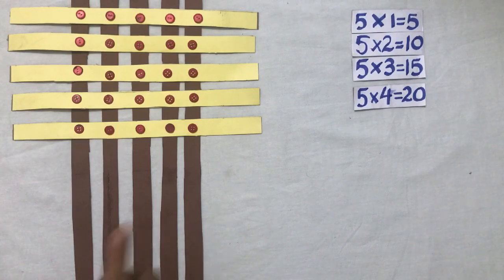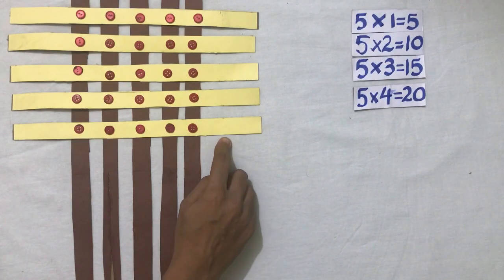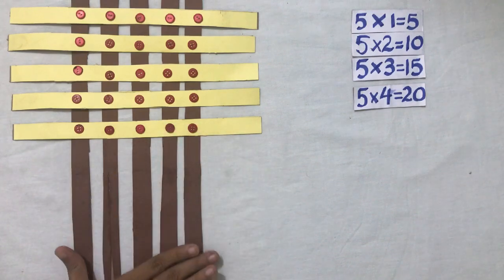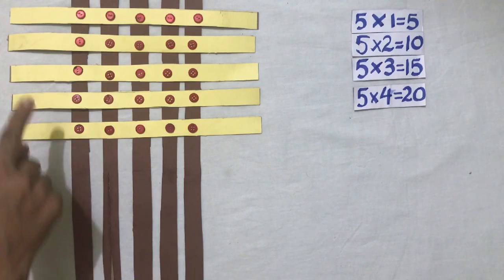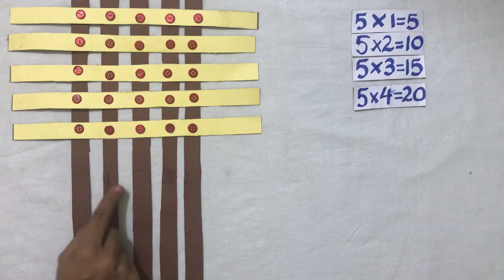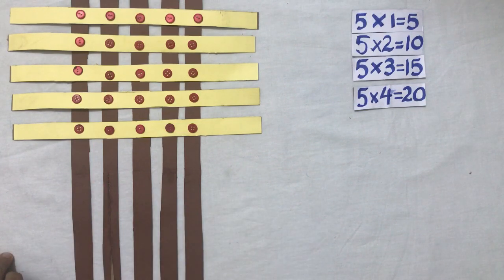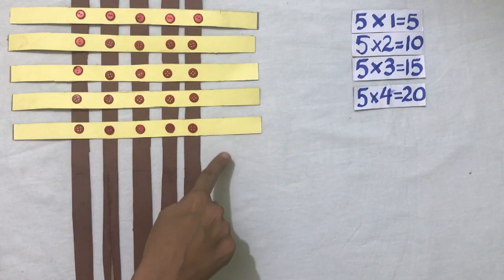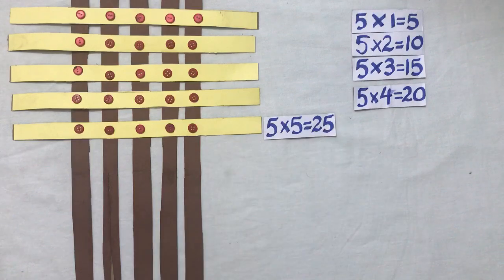Dear students, I have placed one more horizontal strip over these vertical strips. Now tell me the number of horizontal strips. Yes, they are five. And number of vertical strips? Yes, they are also five. Then points of intersection — twenty-five. That means five fives are twenty-five.